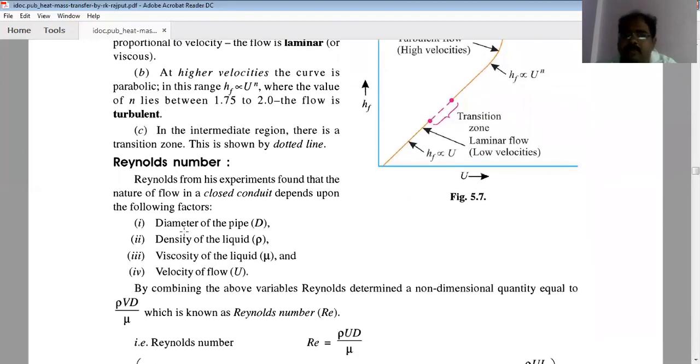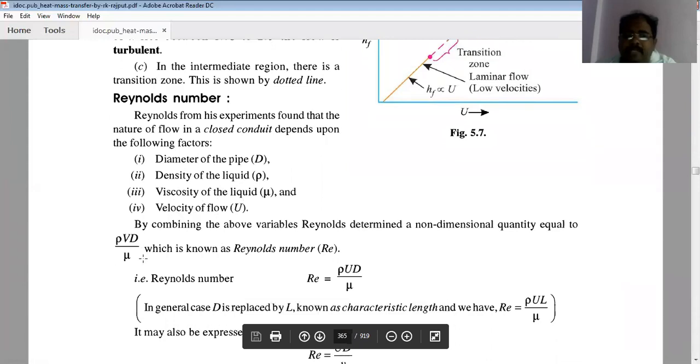Reynolds number is a combination of diameter of the pipe, density of the liquid, viscosity of liquid, and velocity of fluid. By combining these, it is called Reynolds number.